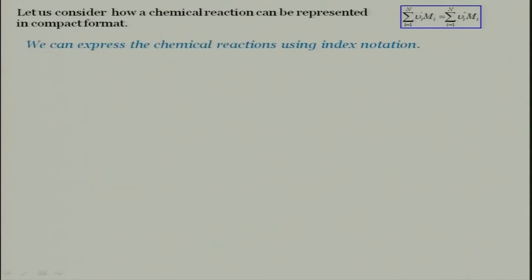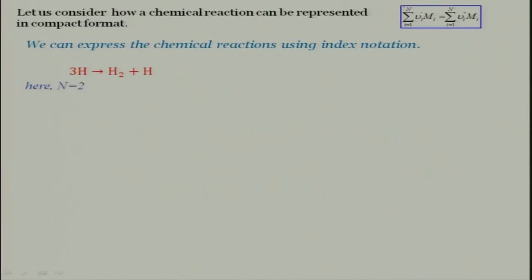Let us consider a chemical reaction and express it in index notation. For example, 3H → H2 + H. In this case, how many participating species are there? H and H2 — that means N equals 2. I want to write this in a very compact way.